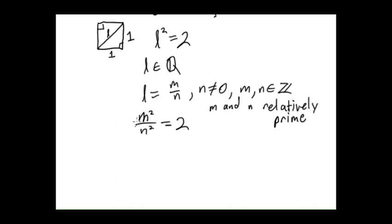Now thanks to the algebraic magic of the rational numbers we can write this equation m squared equals 2n squared. We can conclude from this that m squared is even because it's 2 times some integer.